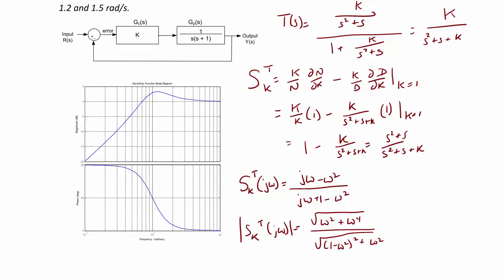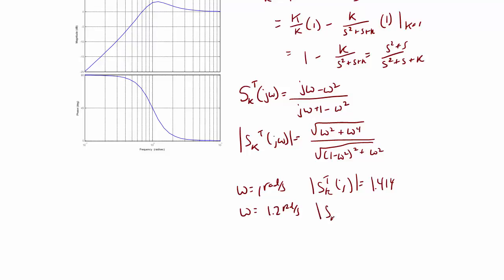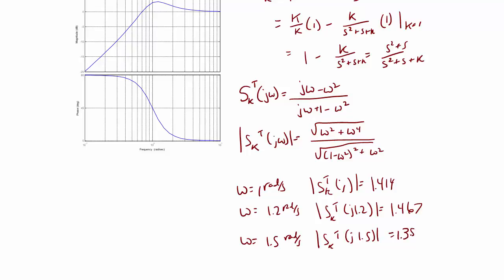Now we are ready to evaluate the magnitude at ω equal to 1, 1.2, and 1.5. At ω equal to 1 radian per second, the magnitude of the sensitivity function is 1.414. At ω equal to 1.2 radians per second, the magnitude is 1.467. And at ω equal to 1.5 radians per second, the magnitude is 1.385.